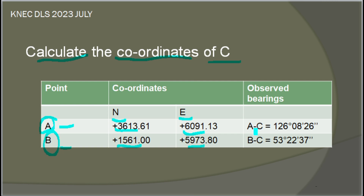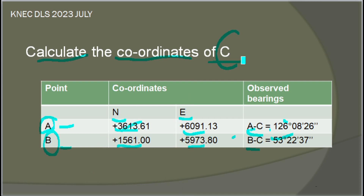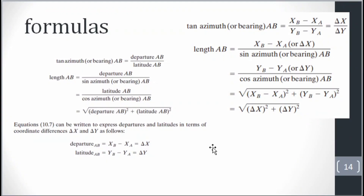C is the unknown value here. There are many calculation methods, but I will use the simplest one that is easy to understand. I tried many approaches and found the simplest way to get the coordinate of C. That simple formula comes from the traversing formulas.